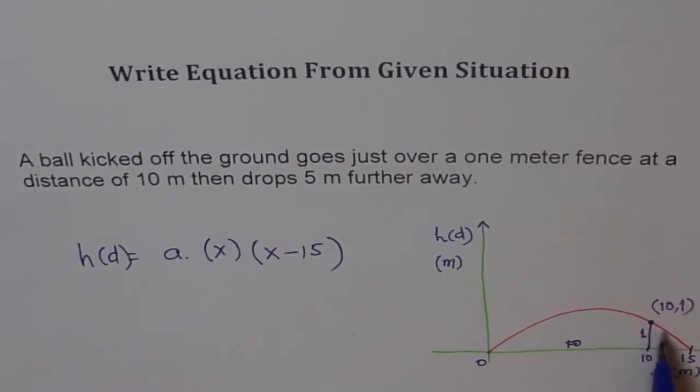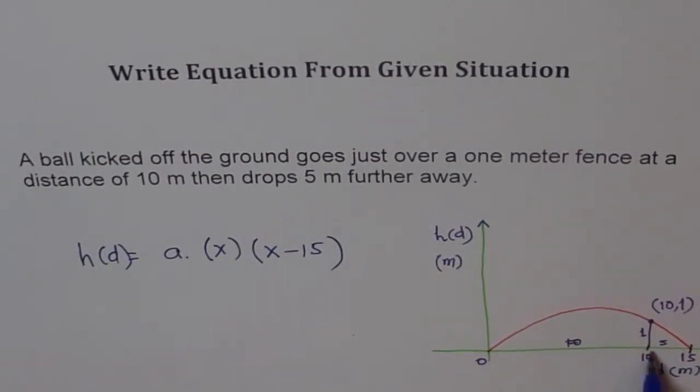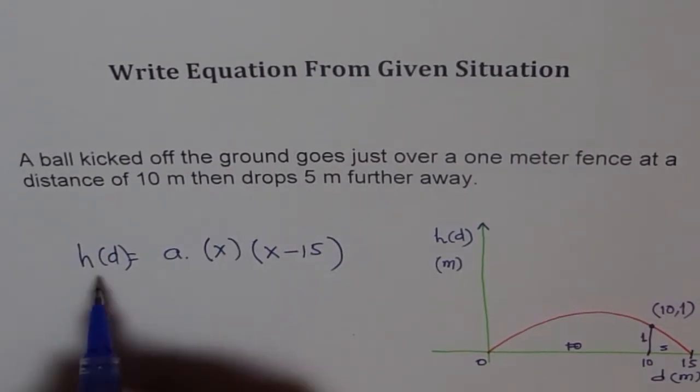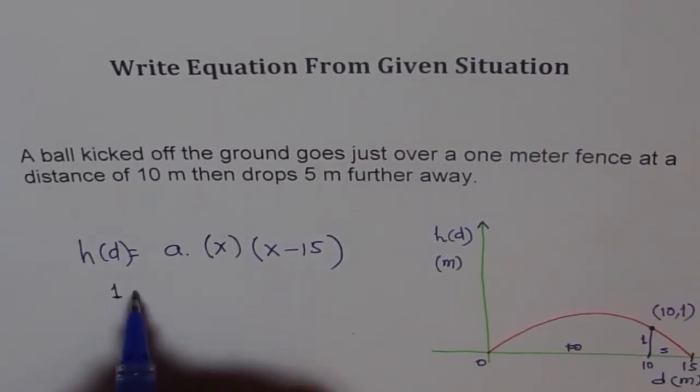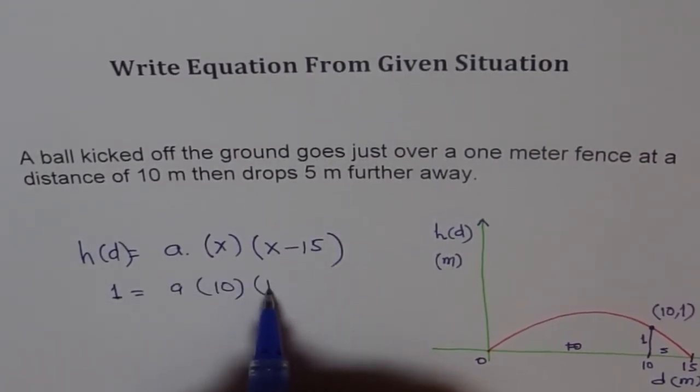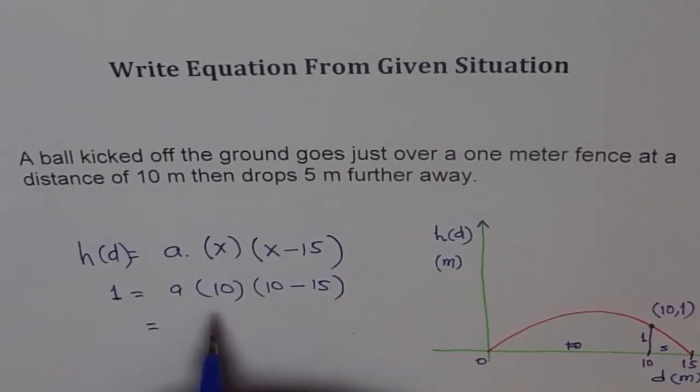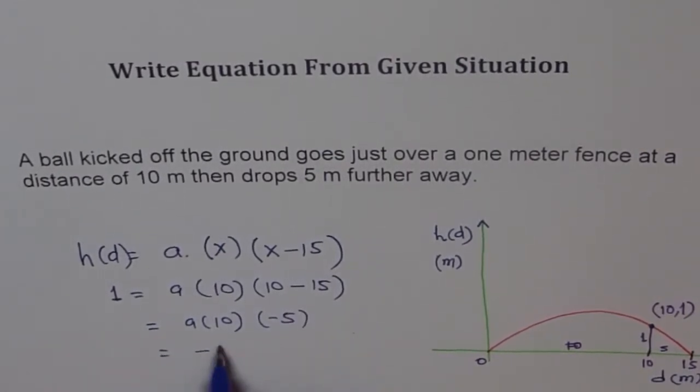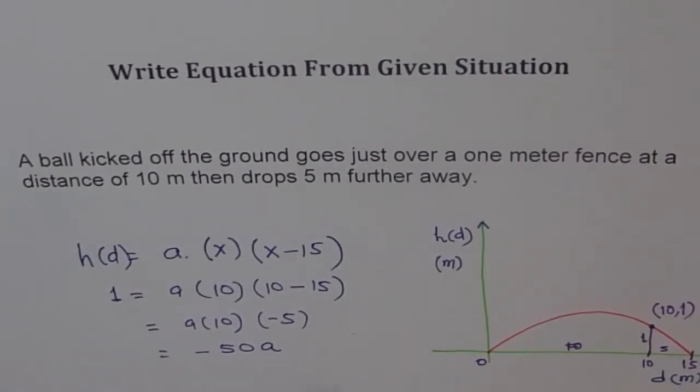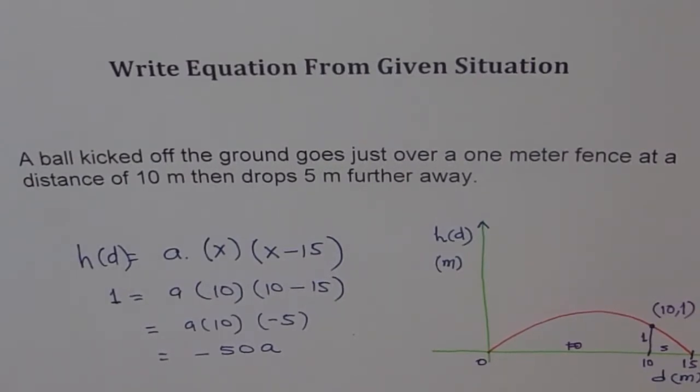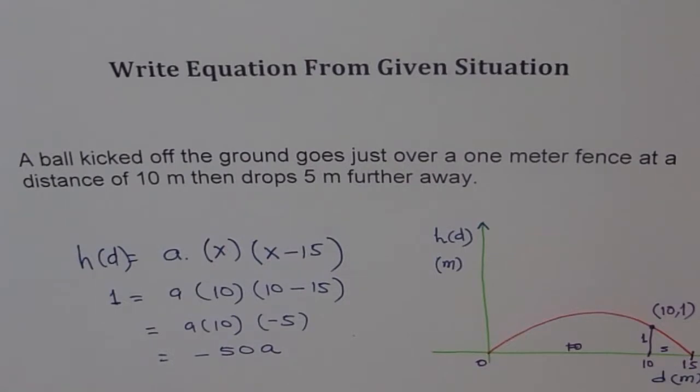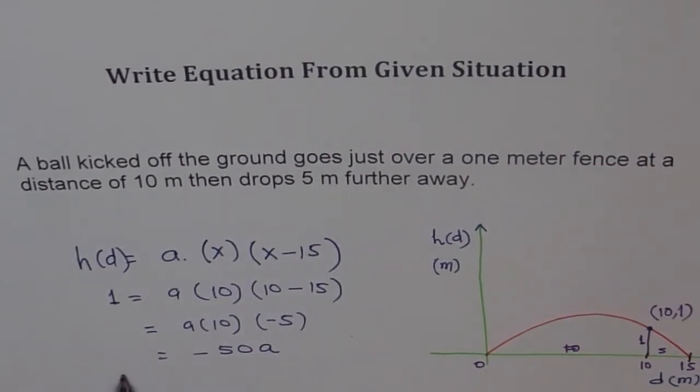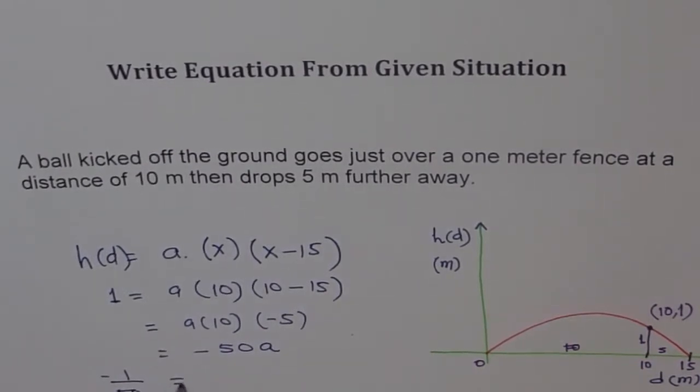Now, to find the value of a, we will use this point. At a distance of 10 meters, a fence of 1 meter high is crossed. So we'll write x as 10 and y as 1 and find a, so simple. So height is 1. So 1 here equals to a times, and x is 10, 10 times 10 minus 15, which means 10 times, 10 minus 15 is minus 5. So we have minus 50a equals 1. So that is what it is. It makes sense. So what is a equals to? So a equals to, from here, 1 over 50, minus, is the value for a.